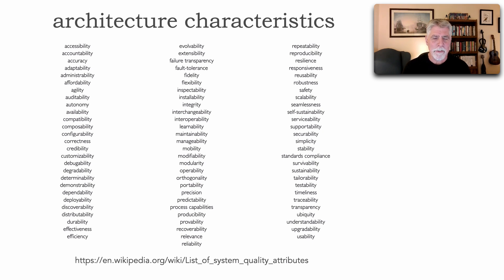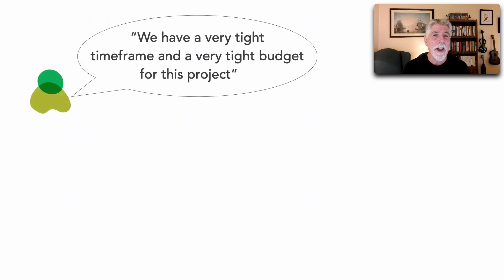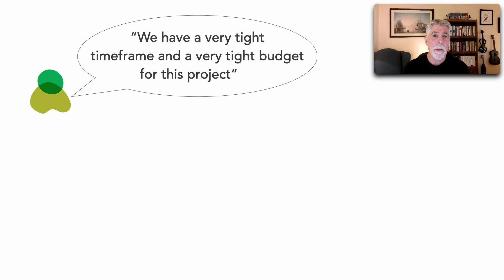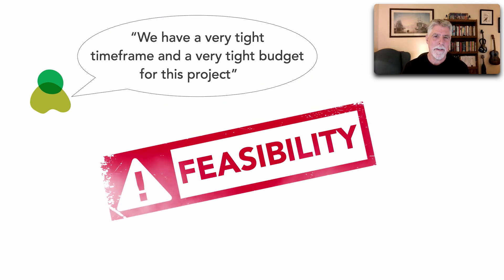But what I want to focus on in this lesson is a different kind of architectural characteristic, a different kind of ility. Let's say that our business sponsor or product owner says we have a very tight timeframe and a very tight budget for this project. This is in fact an architectural characteristic, and it is one of my favorites — feasibility — the actual topic of today's lesson.